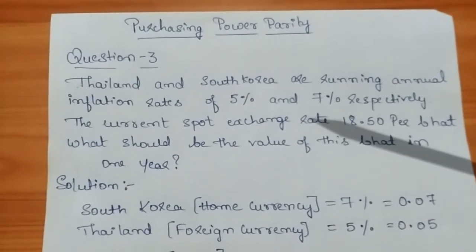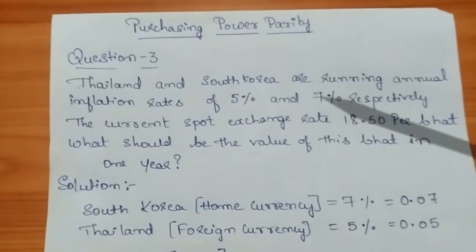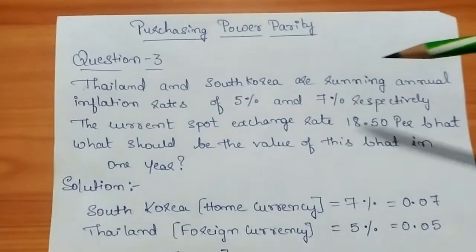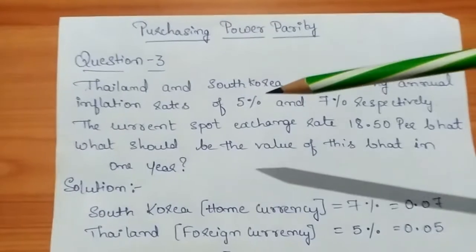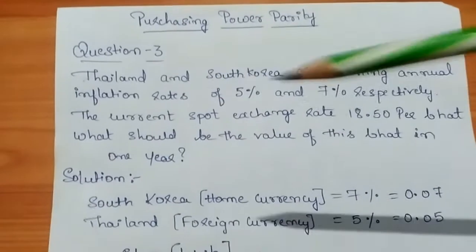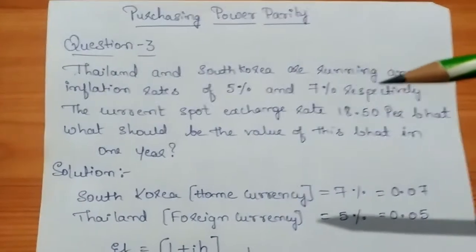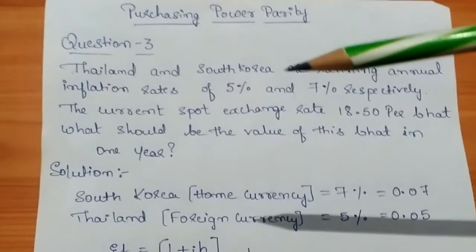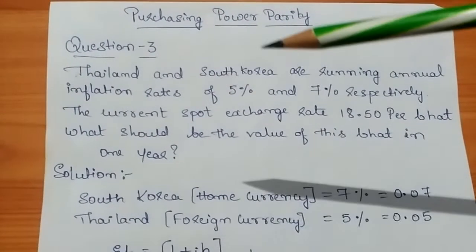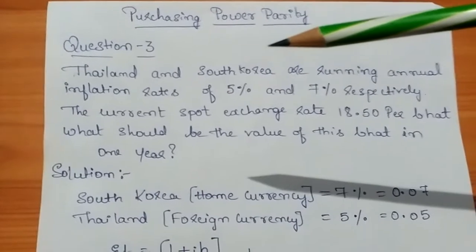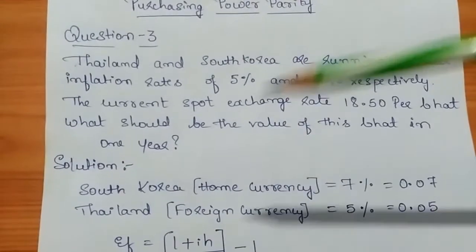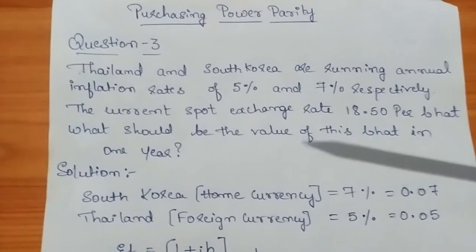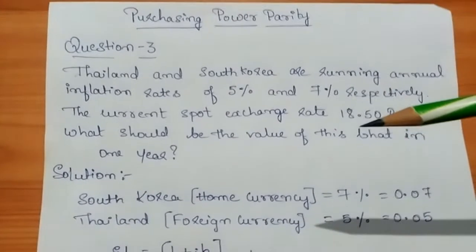Let's go for question number 3 relating to purchasing power parity. Thailand and South Korea are running annual inflation rates of 5% and 7% respectively. The current spot exchange rate is 18.5 WON per Baht. What should be the value of the Baht in one year? Thailand's currency is the Thai Baht and South Korea's currency is the WON.